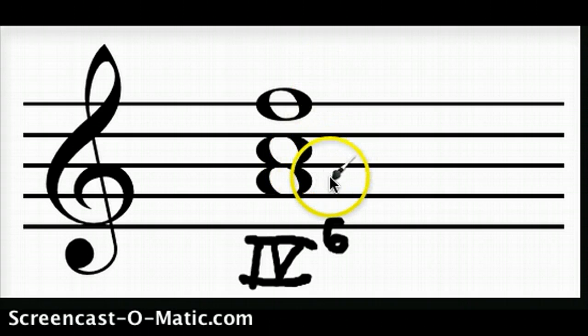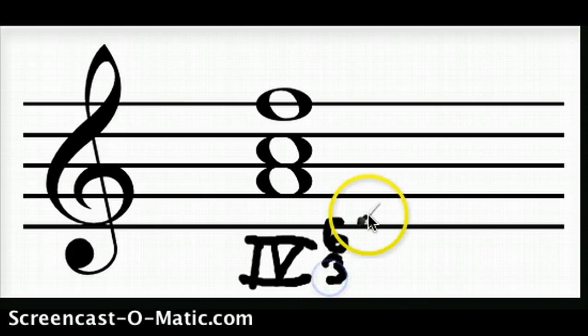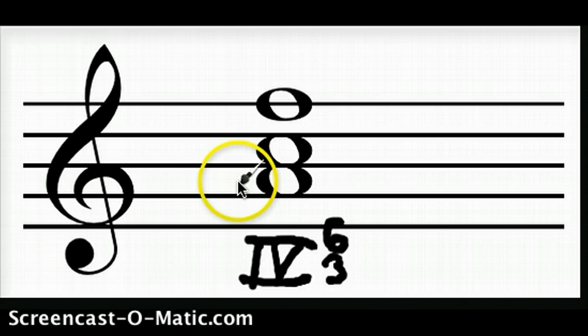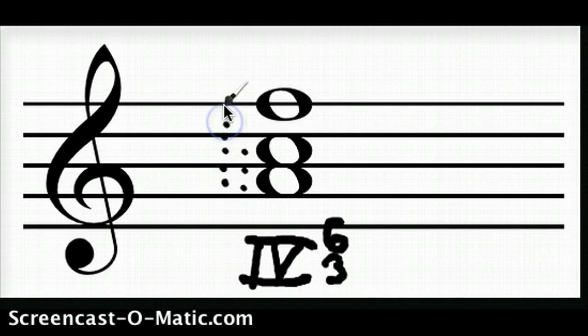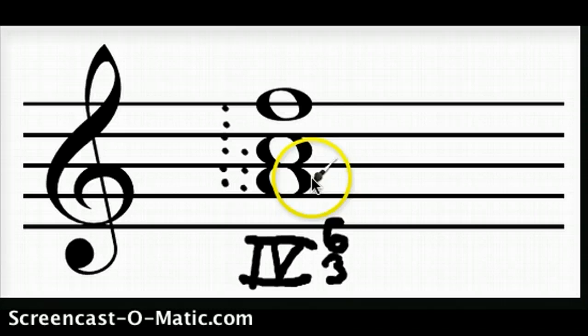Now someone might ask why do we write a six and it's because it's sort of shorthand for the intervals. It's actually shorthand for 6-3. You wouldn't write 6-3. You just write 6 as a shorthand but it means from the bass note to the next note is one, two, three and then from the bass note one, two, three, four, five, six. That's the logic behind it. You don't need to know that. You just memorize.